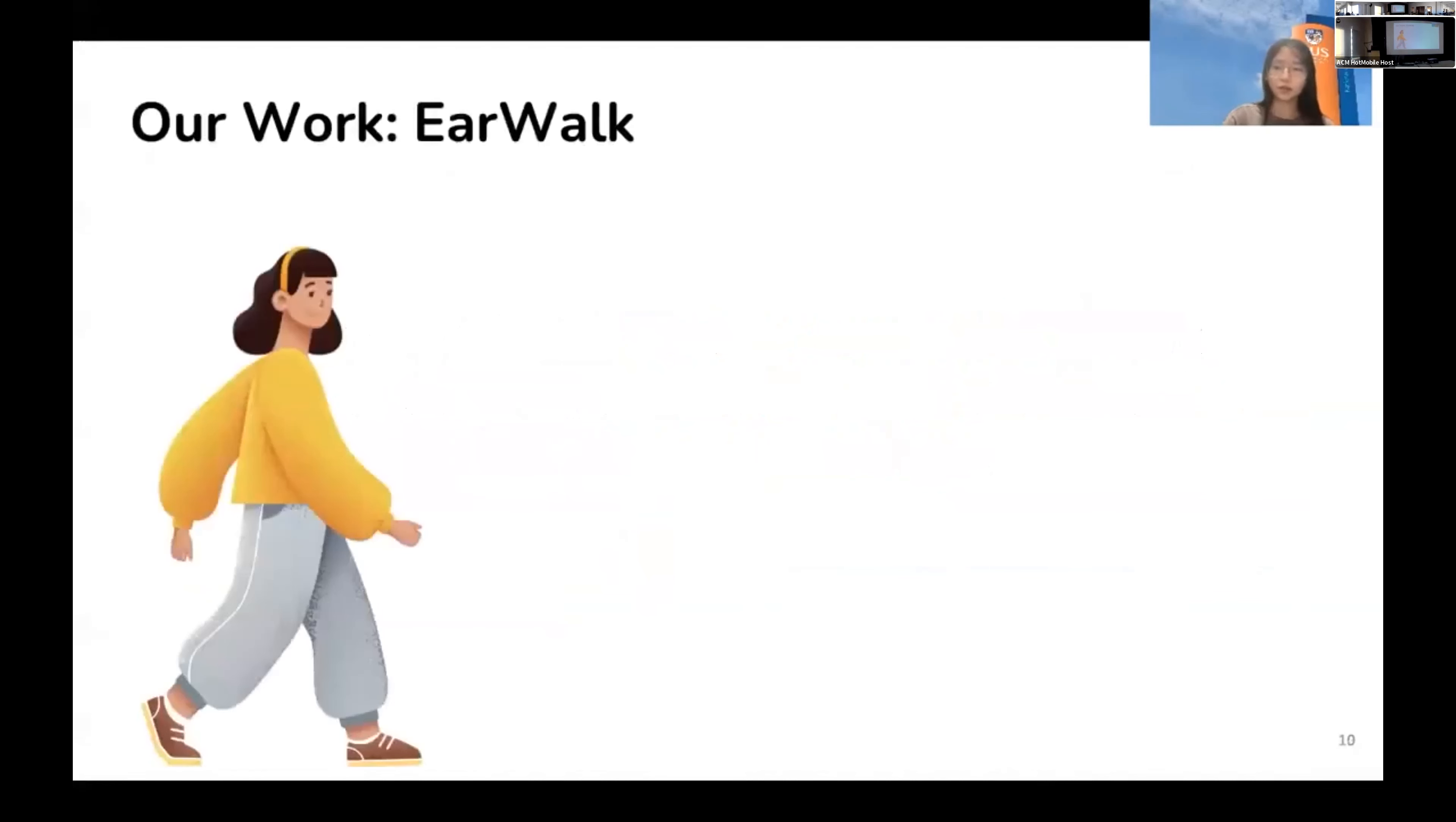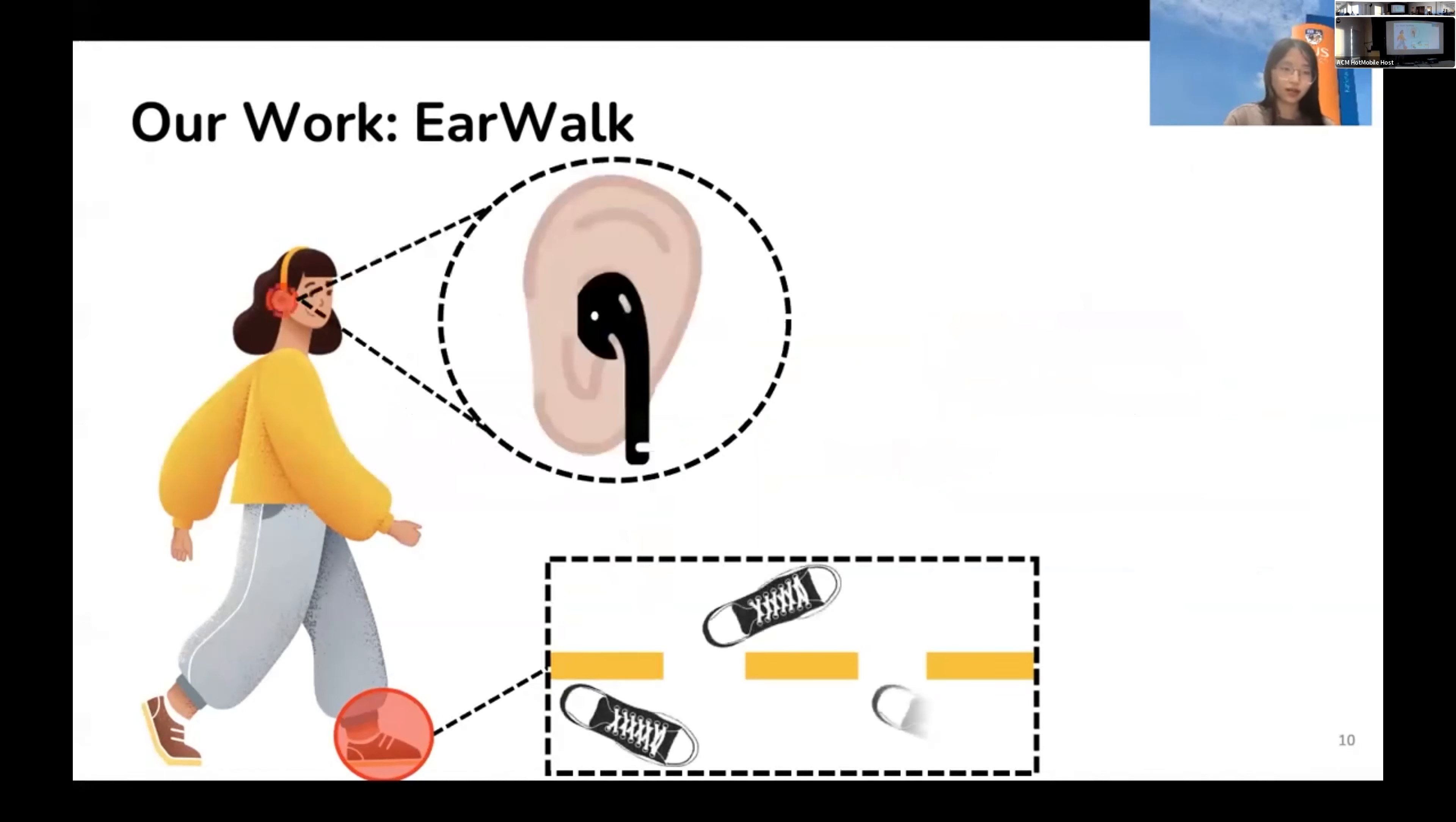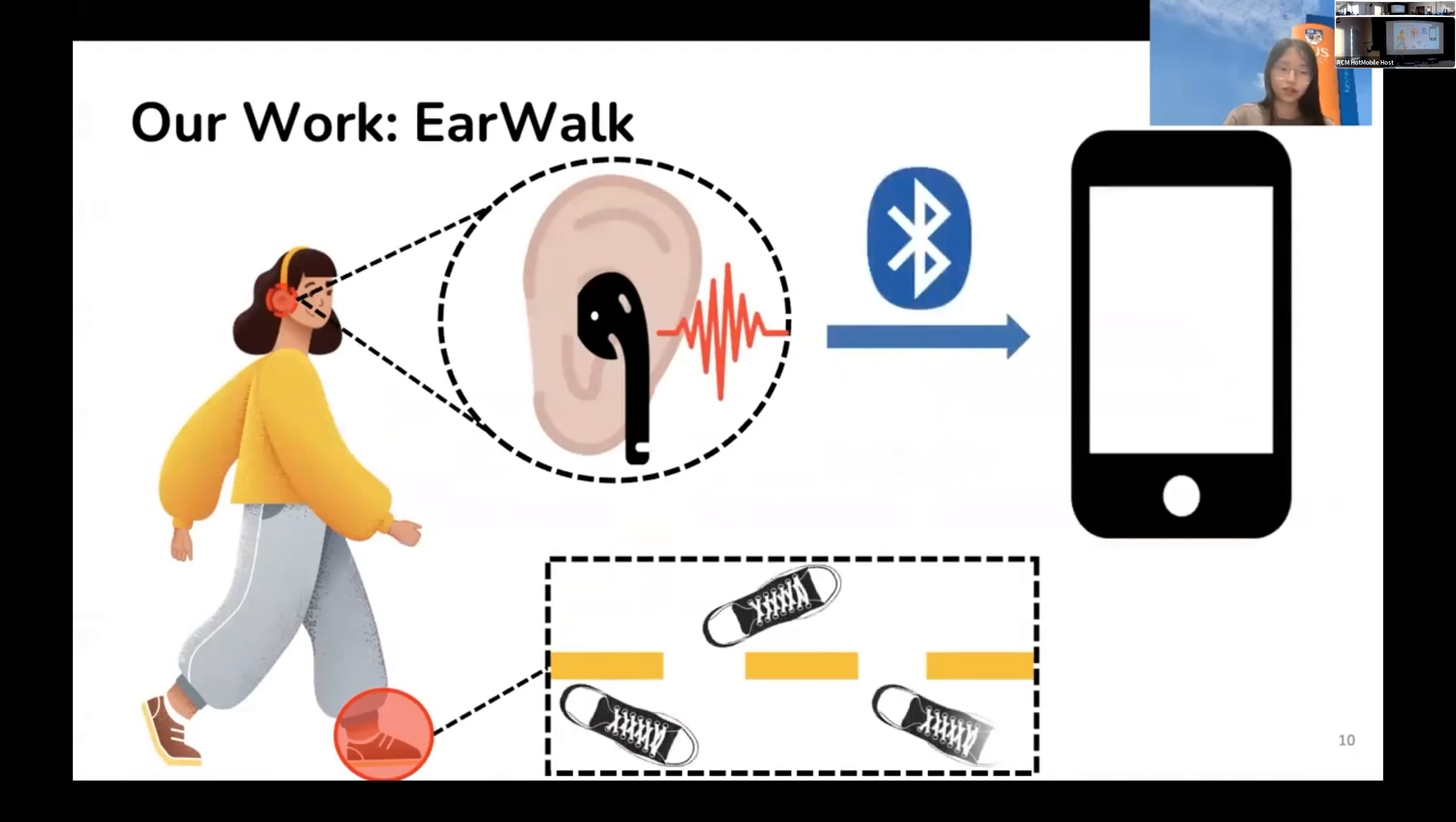Let me paint the picture. Imagine this patient is training to walk toe-out and the only device she needs is an earbud that is continuously sensing the head motion using the onboard accelerometer. Then the patient's smartphone retrieves the acceleration signals from the earbud via Bluetooth. And after analysis, the smartphone can inform the patient that she is walking her targeted posture, that is toe-out walking. So in this talk, I'll actually show you that this is indeed feasible.